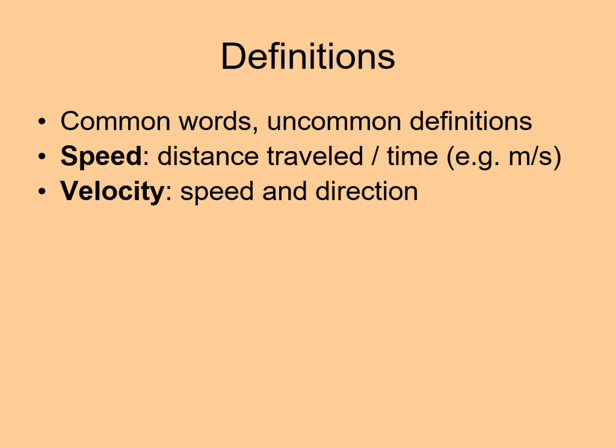Velocity is both speed and direction. In other words, with velocity, you need to know not just how fast something is going, but also in what direction. If you say you're going 65 miles per hour, you're talking about your speed. If you say you're going 65 miles per hour eastbound, you're talking about your velocity.